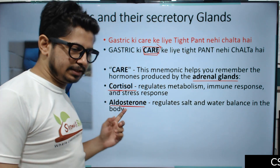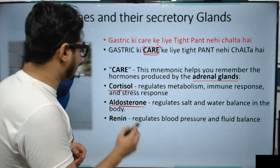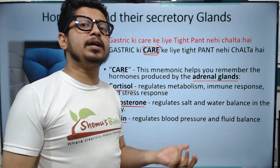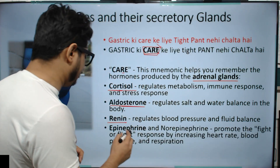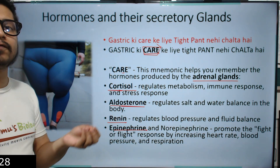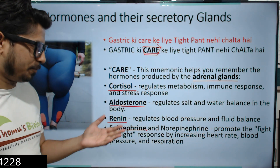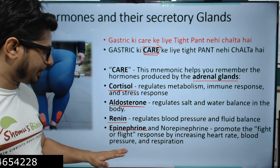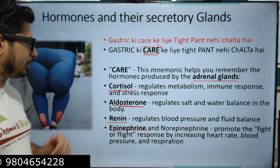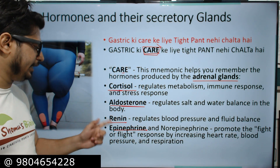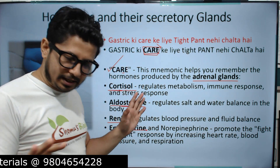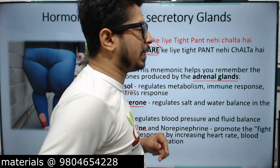Continuing with CARE adrenal hormones: R for renin — regulates blood pressure and blood fluid balance. E for epinephrine and norepinephrine — promotes the fight-or-flight response by increasing heart rate, blood pressure, and respiration rate. All four hormones — cortisol, aldosterone, renin, and epinephrine — are from the adrenal gland. That is C-A-R-E. Second part done.